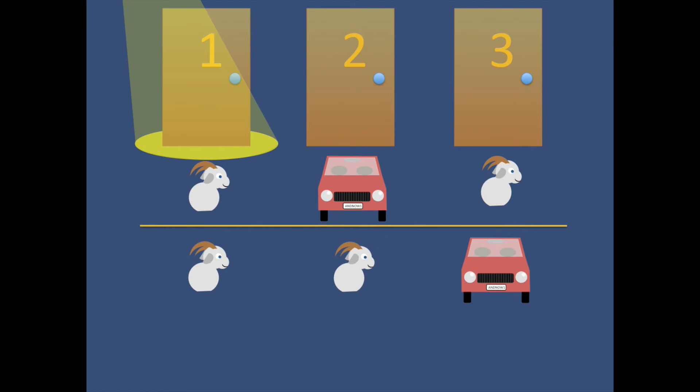The second possibility is that door number three has the car, so the presenter will, in this case, open door number two, showing a goat. So switching to door number three wins you the car.